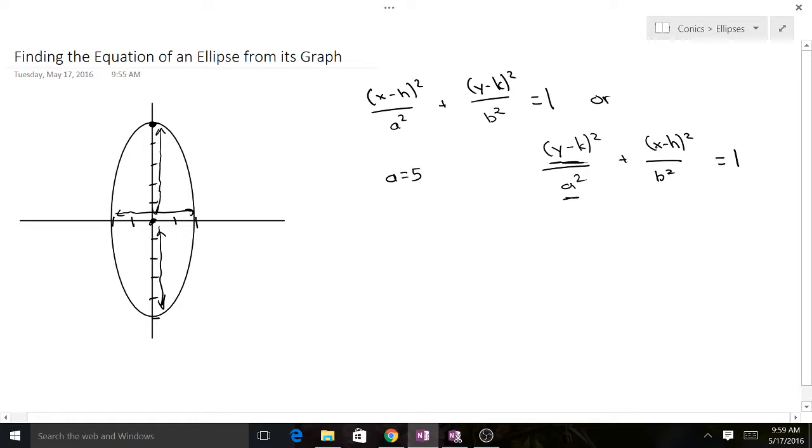Then b can be found out in a similar way. It's just going to be the distance from the center to the vertex. So that's going to be 1, 2. So b equals 2.